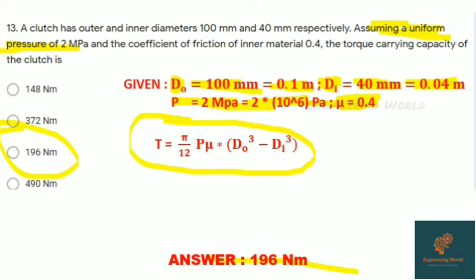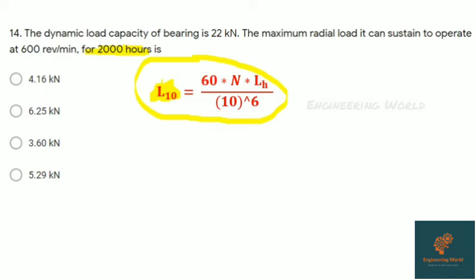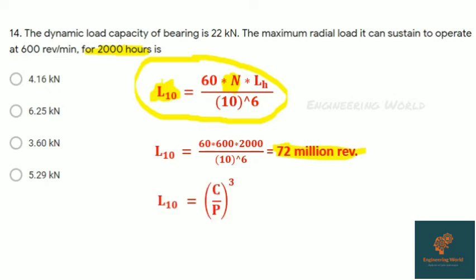Here, the life is given in hours. We have to convert it into L10 life, that is in revolutions. L10 equals 60 × N × L_h, that is 60 × 600 × 2000, which equals 72 million revolutions. Then we use the formula: L10 equals (C/P)³. By putting values, we get P equals 5.29 kN.